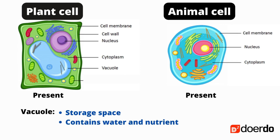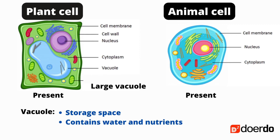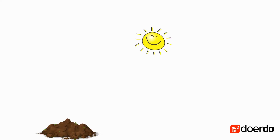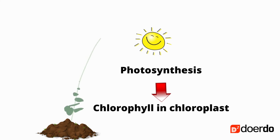The plant cell has one large central vacuole that contains cell sap, whereas the animal cell has numerous small vacuoles. We know plants make food during photosynthesis with the help of chlorophyll.